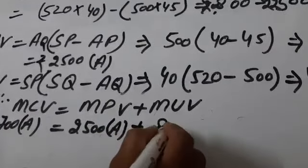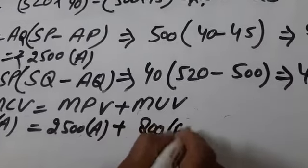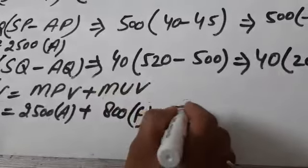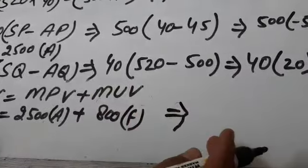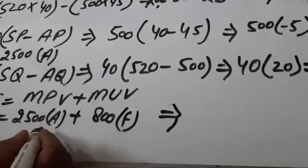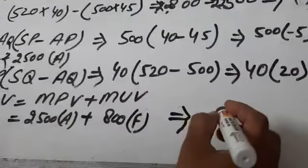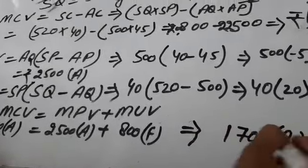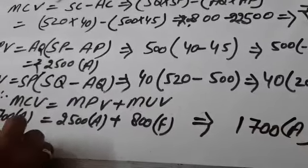And MUV 800 in favorable form. One answer in negative and one in positive, so we will deduct the values. The larger value is adverse, so the answer will come in negative, which means 1700 in adverse form.